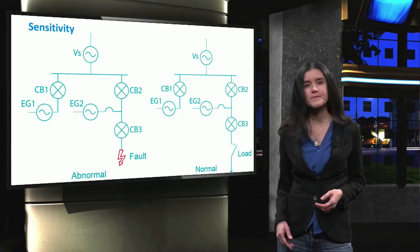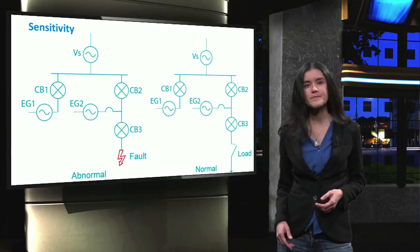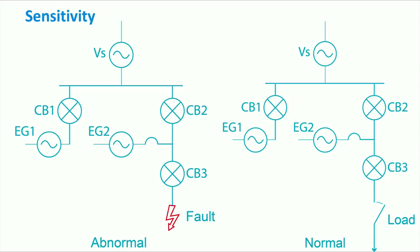For example, let's take a look at two different conditions. On the left-hand side, the system is affected by a fault. We define this situation as abnormal condition. On the right-hand side, instead, the system is affected by a load connection. This is an example of a normal condition in the system.